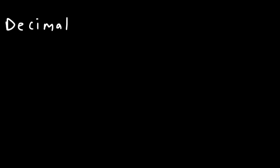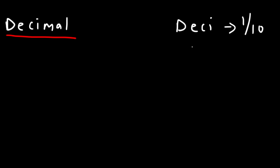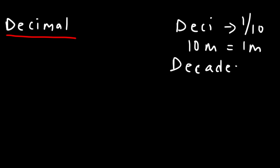When you hear the word decimal, think of the prefix deci. When I hear the word deci, I think of one-tenth of a whole. For example, there are ten decimeters in one meter. I also think of the word decade — a decade corresponds to ten years. And so deci is associated with ten.